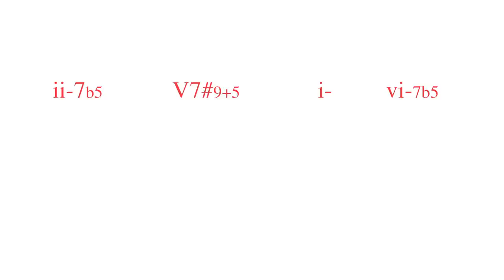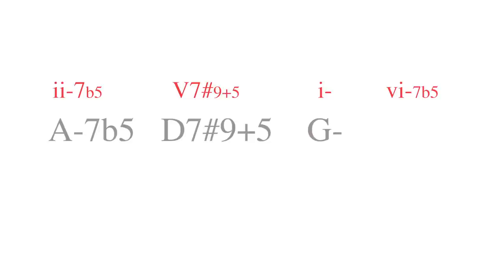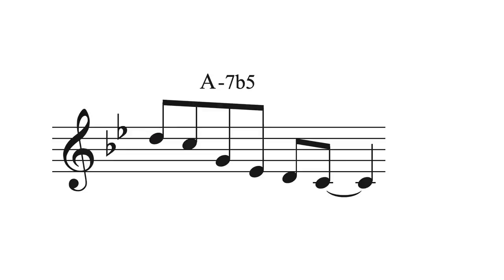Now we're going to superimpose this melodic structure over a minor 2-5-1 in G minor: A minor 7 flat 5, D7 to G minor, which we will follow by E minor 7 flat 5, as it adds some nice movement to the progression. On the A minor 7 flat 5, we are going to start the Cry Me A River lick on the 4th or the 11th.